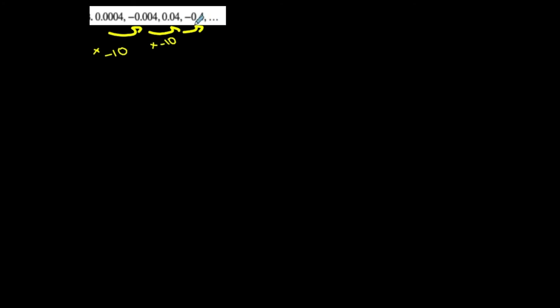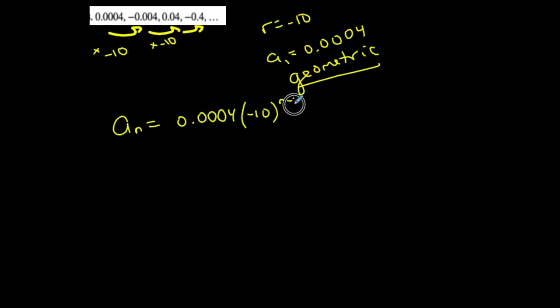I'm multiplying every term by negative 10, so that means my common ratio is negative 10. My first term is 0.0004. Careful with your zeros. So the nth term of this geometric, it's geometric in form because it follows that pattern such that I'm multiplying every term by the same number to get to the next one. So the nth term is a1, 0.0004 times r, which is negative 10, to the n minus 1.